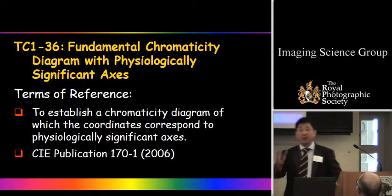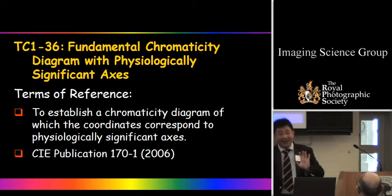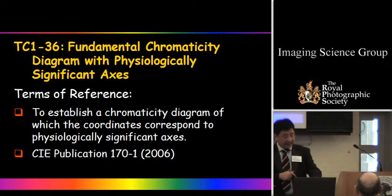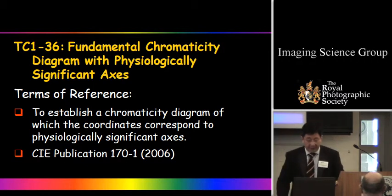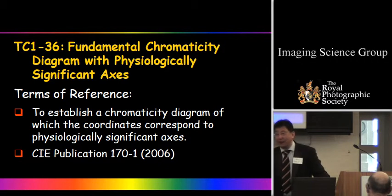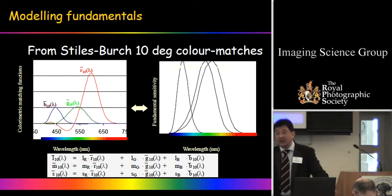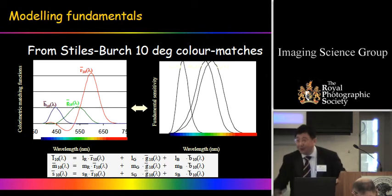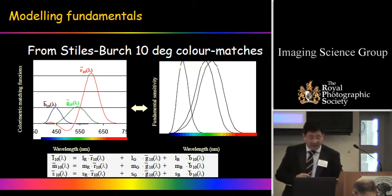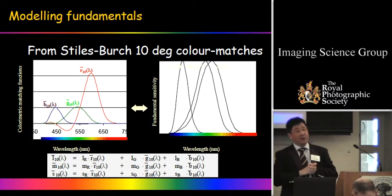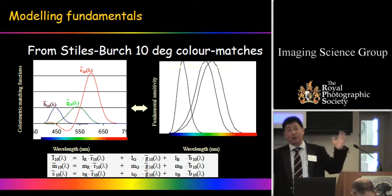In Division 1 we have color and vision two paths. TC1-36 is looking at a fundamental chromaticity diagram for physiologically significant axes — that is, color matching functions based on cone responses: RGB and LMS. Importantly, the color matching function can take into account field size. Why do we have only 2-degree and 10-degree? What about 5-degree or 6-degree? And different ages of observers? TC1-36 worked on this for a very long time and has almost finished — doing very careful experimental work to quantify ocular pigment variation with age and field size.